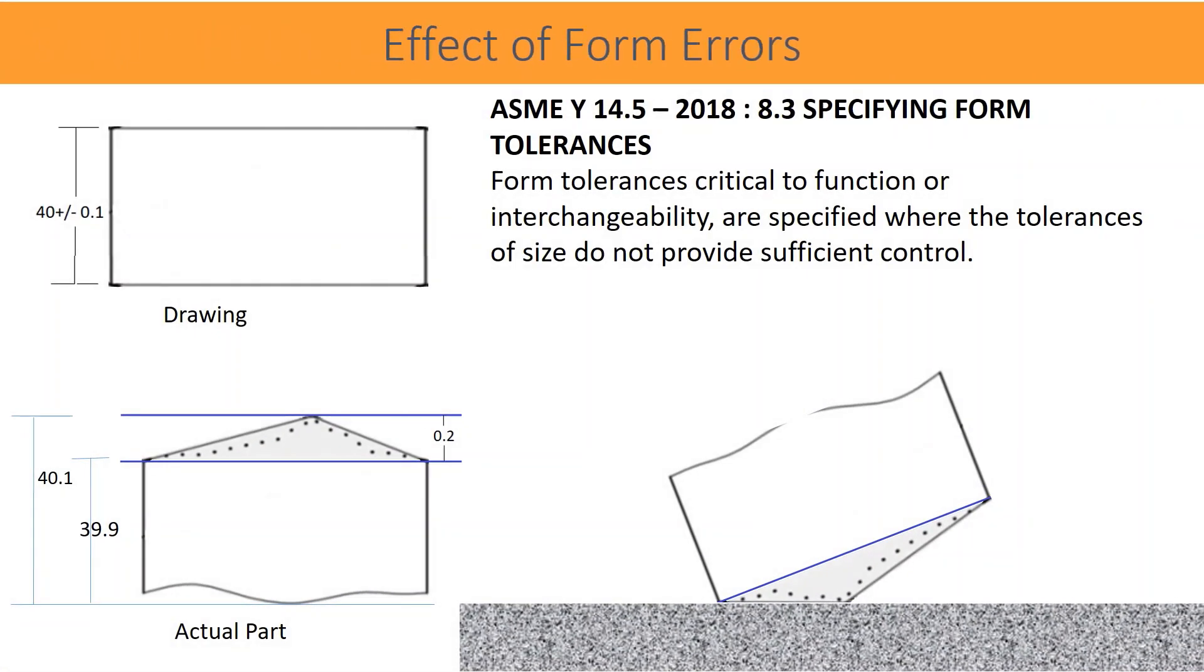According to ASME Y14.5 2018 GD&T standard, the need of specifying the form tolerances is given: form tolerances critical to function or interchangeability are specified where the tolerances of size do not provide sufficient control.